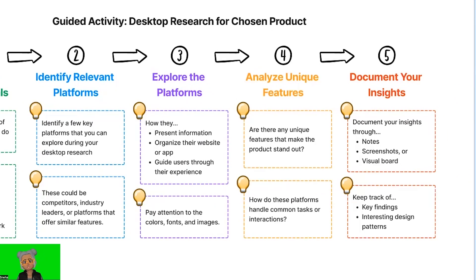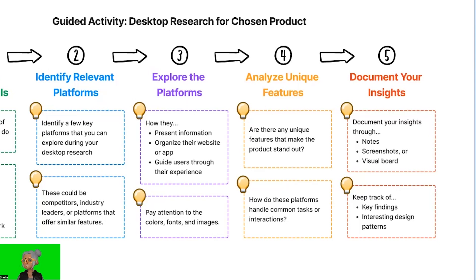Step 4: Analyze unique features. Take a closer look at the special features or functionalities offered by the platforms you're researching. Are there any unique features that make the product stand out? How do these platforms handle common tasks or interactions? Analyze and take note of these special features as they might inspire ideas for your own product or project.